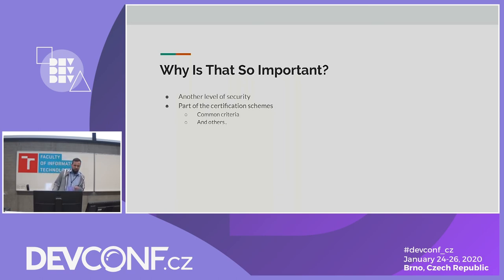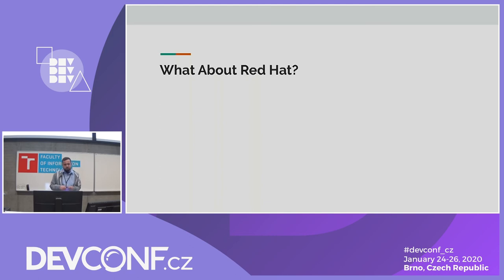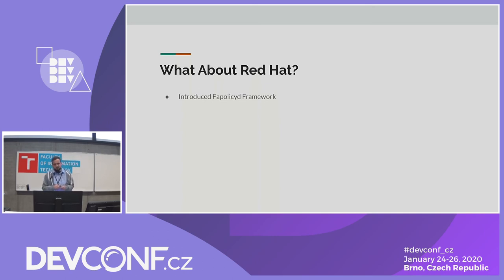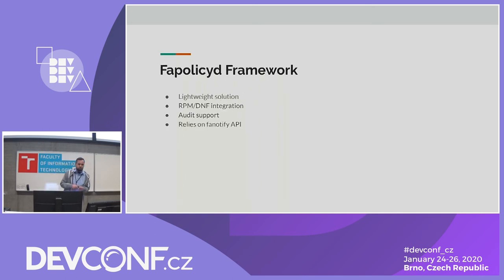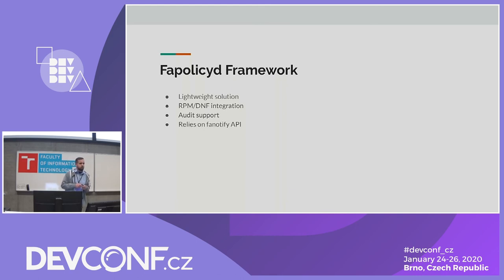So where is Red Hat? We introduced the FAPOLICYD framework in RHEL 8.1 and Fedora 29. It is a simple and lightweight solution from Red Hat that benefits from RPM and DNF integration, has AVC support, and is built upon the FANotify API.